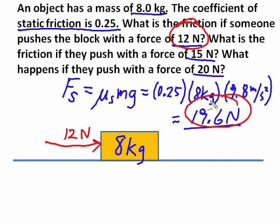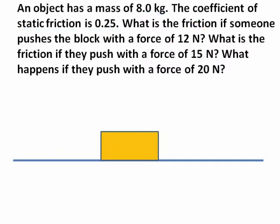Imagine pushing with 12, and all of a sudden this block comes flying towards you because the friction is bigger than your push. No! Friction will increase as you push. There's 19.6 available, and that's the threshold. So if I push with 12 newtons, the friction will match me with 12 newtons, but it won't move.